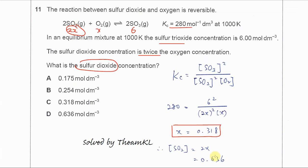Therefore it must be X times 2 so you get 0.636. So answer is D. Thank you.